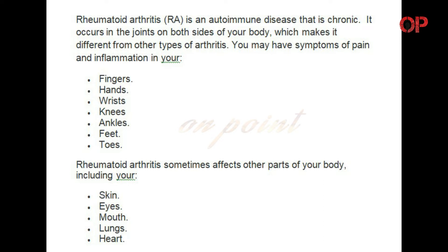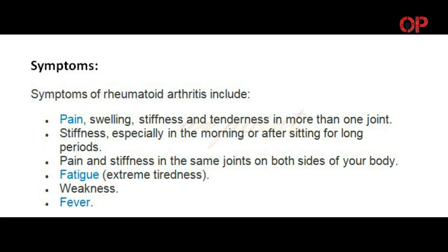Rheumatoid arthritis occurs in the joints on both sides of your body, which makes it different from other types of arthritis. You may have symptoms of pain and inflammation in your fingers, hands, wrists, knees, ankles, feet, and toes. Rheumatoid arthritis sometimes affects other parts of your body including your skin, eyes, mouth, lungs, and heart.